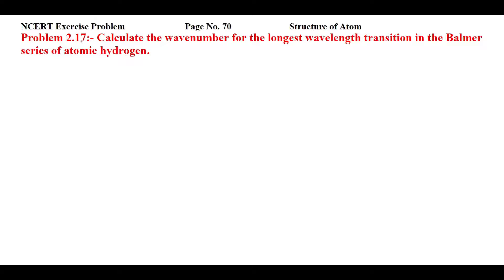This is NCERT exercise problem 2.17 from page number 70 of Structure of Atom. The problem says: calculate the wave number for the longest wavelength transition in the Balmer series of atomic hydrogen. We have a hydrogen atom and we need to find the longest wavelength in the Balmer series. The Balmer series starts from n1 equal to 2, that means the second orbit, and goes to 3, 4, 5, and so on up to infinity.